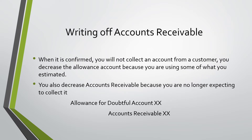Writing Off Accounts Receivable: when it is confirmed that you will not collect an account from a customer, you decrease the allowance account because you are using some of what you estimated. You also decrease accounts receivable because you are no longer expecting to collect it. This journal entry includes a Debit to Allowance for Doubtful Accounts and a Credit to Accounts Receivable.